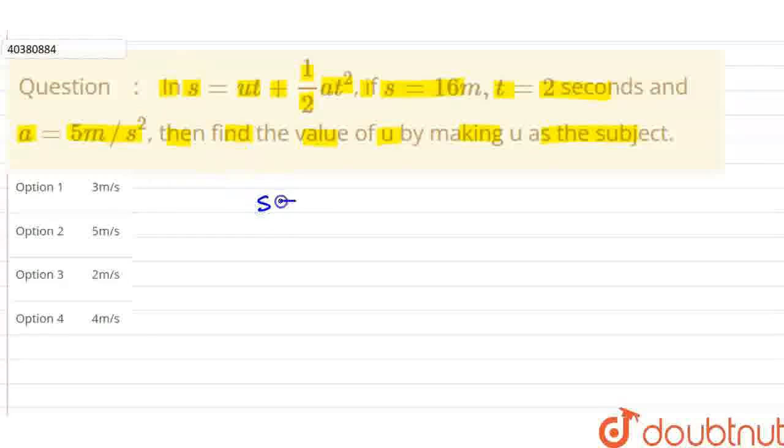Here the equation is given: s = ut + ½at². The values are given in the question. The distance we have given is 16 meters. Time is given as 2 seconds. Here the value of a is 5 meter per second squared.